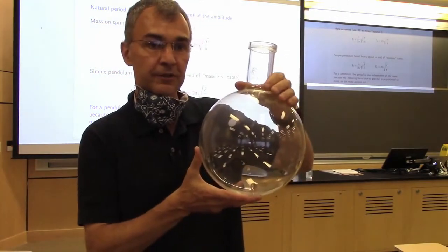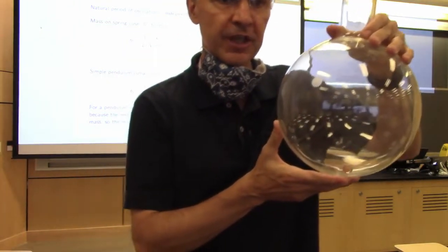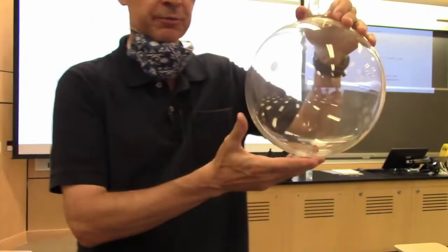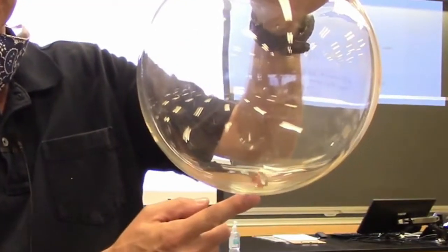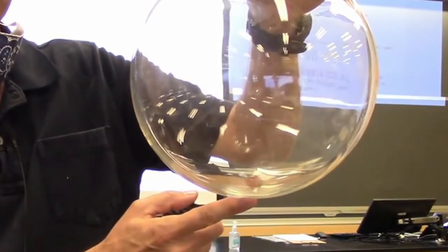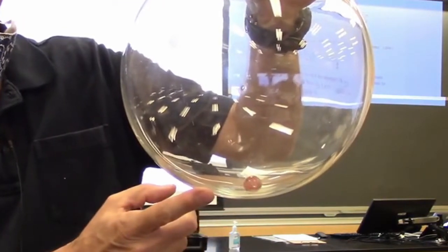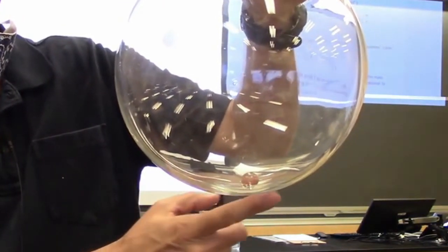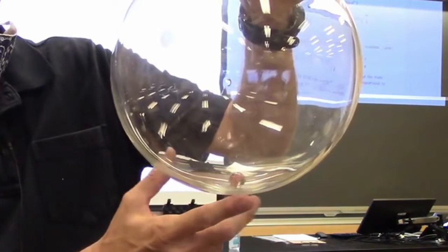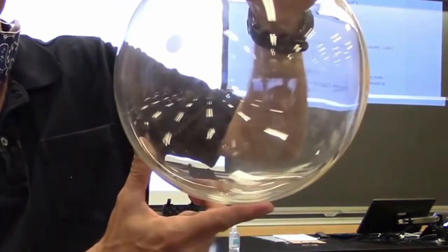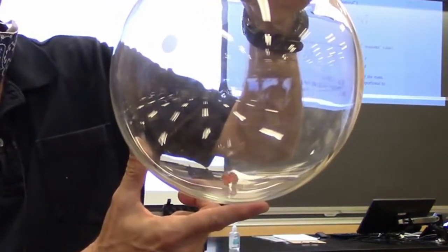One point here is that anytime you have something in stable equilibrium — see if this marble tries to move away from its equilibrium point at the bottom. If it tries to move this way, gravity will push it back where it came from. If it tries to move this way, gravity will push it back where it came from. So if we displace it just a little bit, it will slosh back and forth.